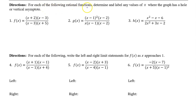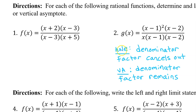For each of the following rational functions, determine and label any values of x where the graph has a hole or a vertical asymptote. A rational function will have a hole if a denominator factor cancels out, and it will have a vertical asymptote if a denominator factor remains. So either way, we focus on the denominator.